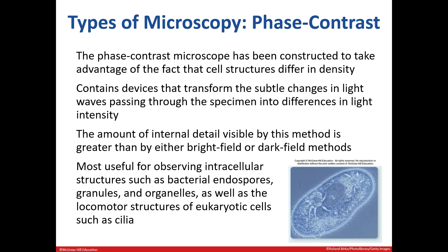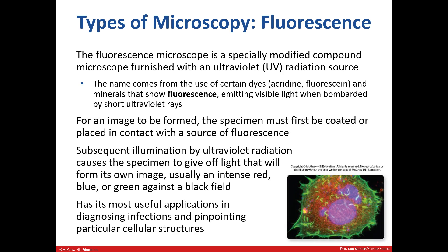Phase contrast microscopes allow us to visualize structures and organisms based on differences in density. It's very useful to identify particular structures like endospores or cilia. Fluorescence microscopy uses dyes that emit light after being hit with UV rays. Depending on the dyes used, it may be a red, blue, or green color that is seen. This can be used to diagnose cancer as well as to determine if treatment is effective.